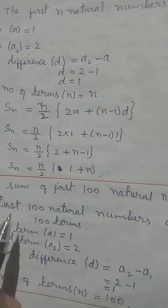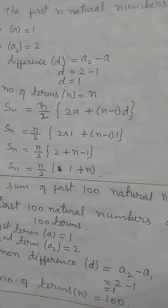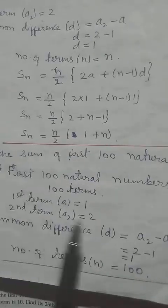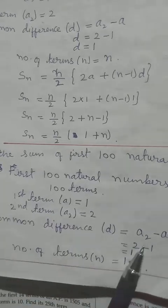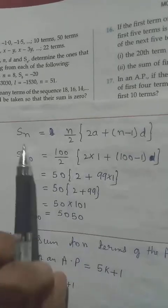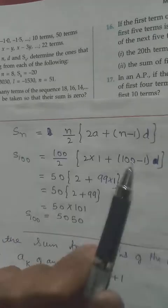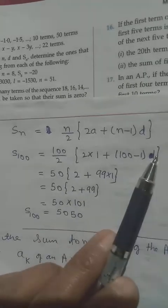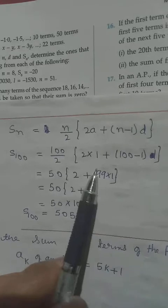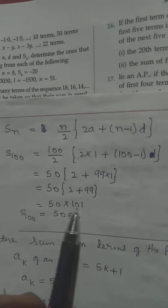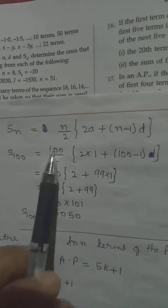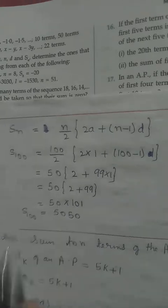For the first 100 natural numbers: 1, 2, 3... up to 100, so N = 100. First term A = 1, second term = 2, common difference = 1. Applying S_N = N/2 × [2A + (N−1)D] with N = 100: S_100 = 100/2 × [2(1) + 99(1)] = 50 × 101 = 5050.